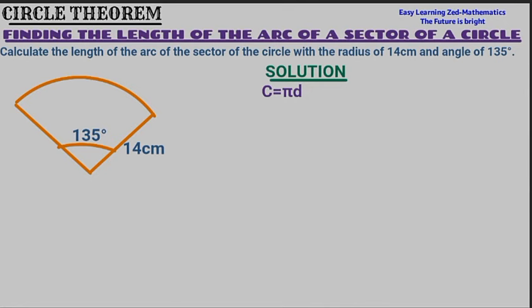We're also going to find the fraction of this sector of the circle. We write the fraction from the angle given over the angle of a complete circle. The angle given is 135 degrees, and the complete circle has 360 degrees, so we write 135 over 360. Then we multiply that by pi multiplied by diameter — the formula for the full circumference.